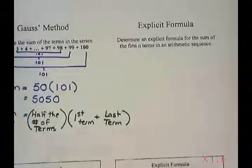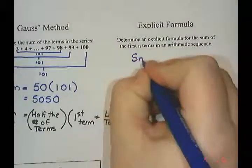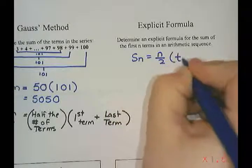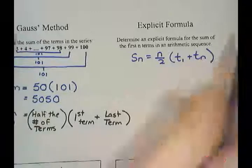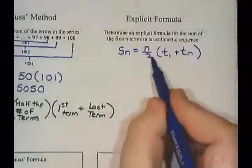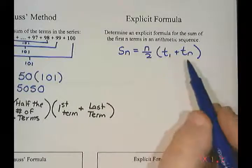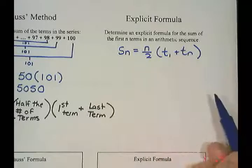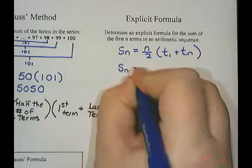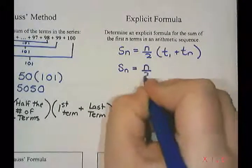So I'm just going to recopy down Sn equals n over 2 times T1 plus Tn. So I like the n over 2, that's okay. The T1 and the Tn I'd like to replace with the other letters that we've been using. So I'm going to say Sn, sum of the first n numbers, is n divided by 2.